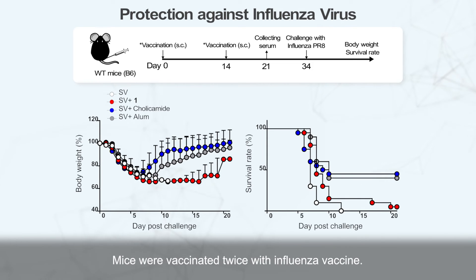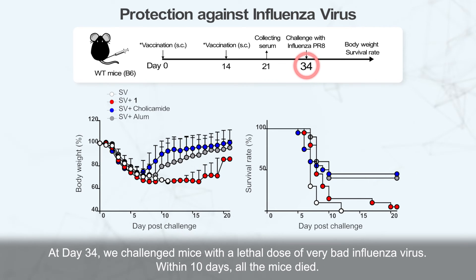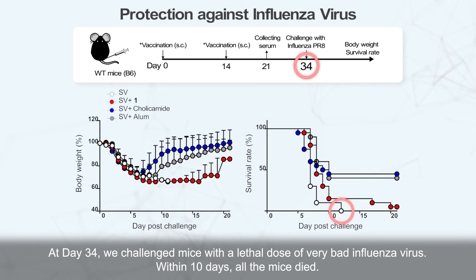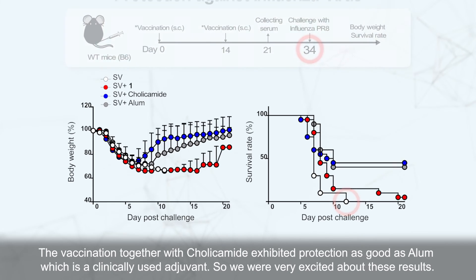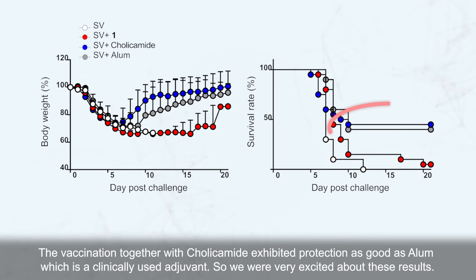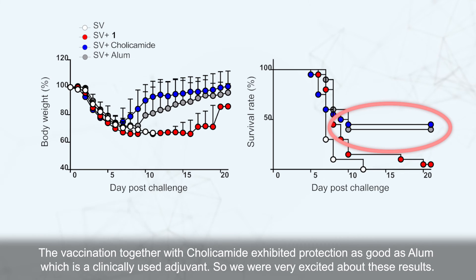The answer is yes. Mice were vaccinated twice with influenza vaccine. At day 34, we challenged the mice with lethal doses of a very bad influenza virus. Within 10 days, all the unprotected mice died. The vaccination together with coricamide exhibited protection as good as Addavax, which is a clinically used adjuvant. We were very excited about these results.